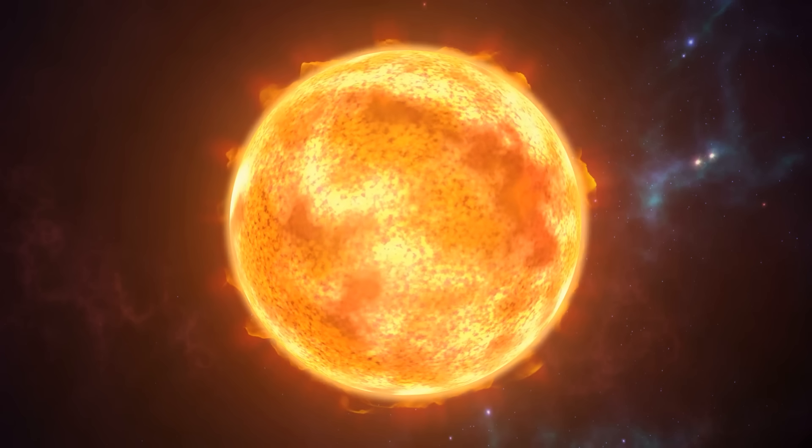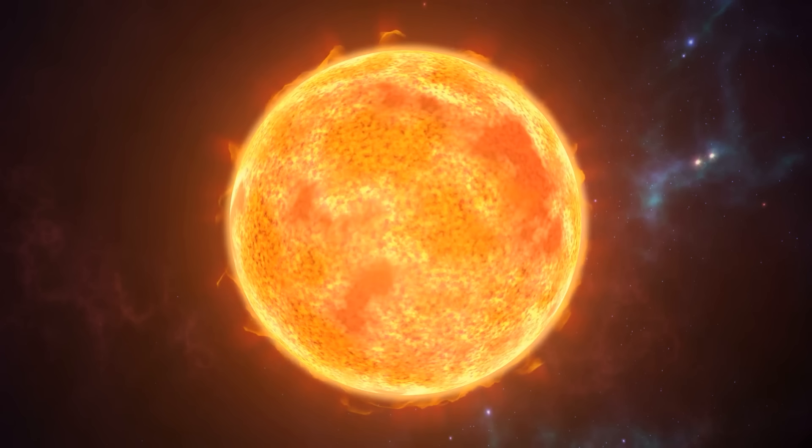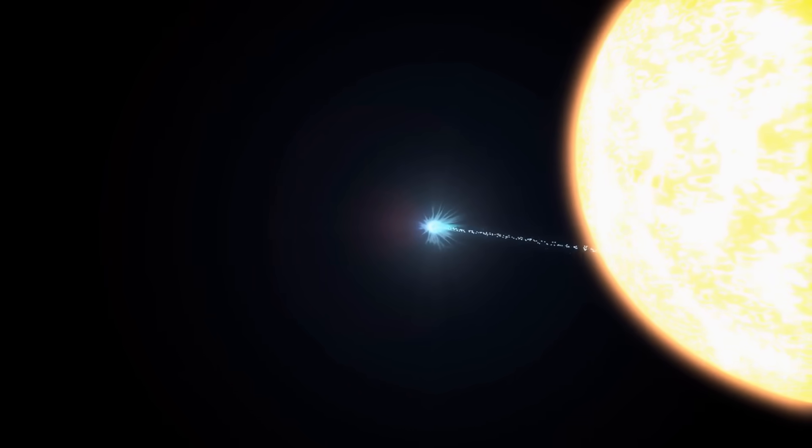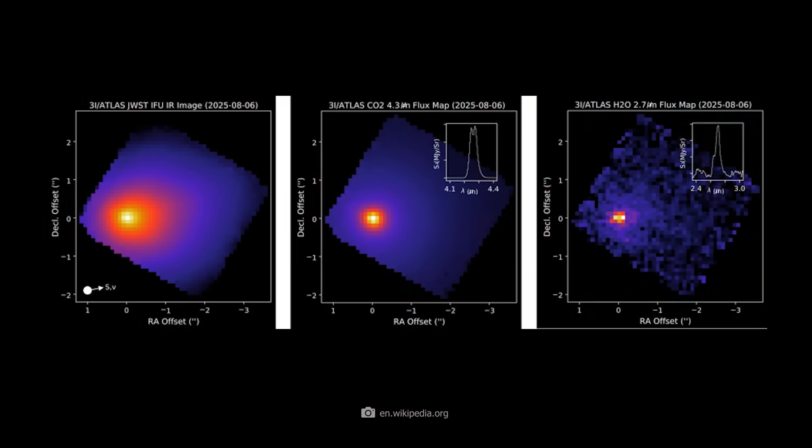The closer it gets to the Sun, the interstellar comet displays strangely short pulses that appear to glow on their own. Spectral analyses indicate that this energy distribution does not correspond to the known thermal processes familiar from ordinary comets.